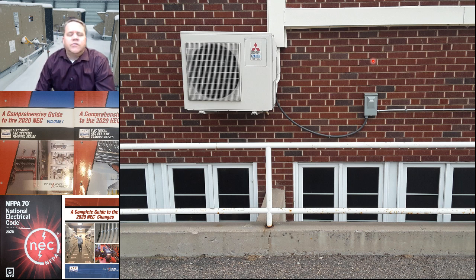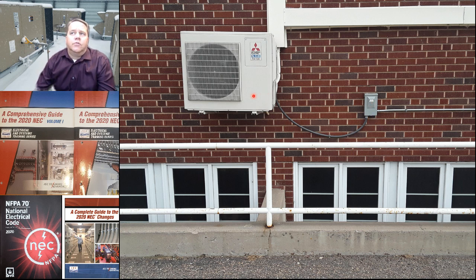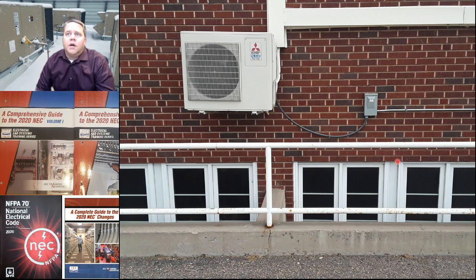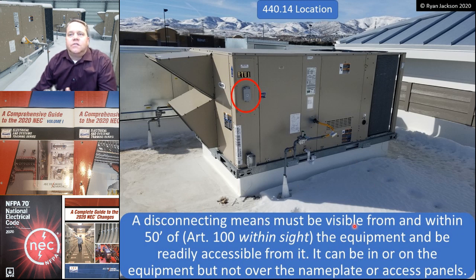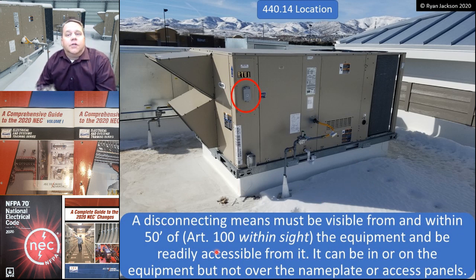The rules that regulate the disconnecting means for air conditioning equipment are a little bit different than the rules for disconnecting means for motors in 430.102 or transformers in 450.14. It's worded ever so slightly different, and it's worth talking about. When you look at 440.14, it says the disconnecting means has to be within sight of the equipment. And when you go to Article 100, within sight means visible and within 50 feet.